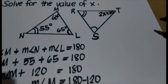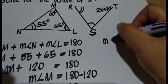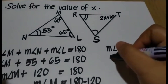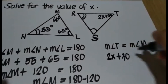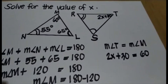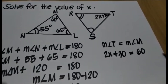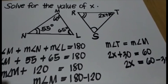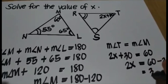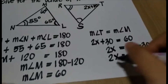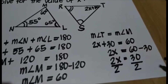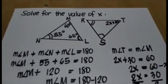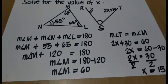So we can now solve for the value of X. Measure angle T is equal to measure angle M. We substitute angle T with 2X plus 30 and angle M with 60. Applying the subtraction property of equality, 2X equals 60 minus 30, which is 30. Applying the division property of equality, we divide both sides by 2. That gives us X equals 15. Therefore, the value of X is 15.